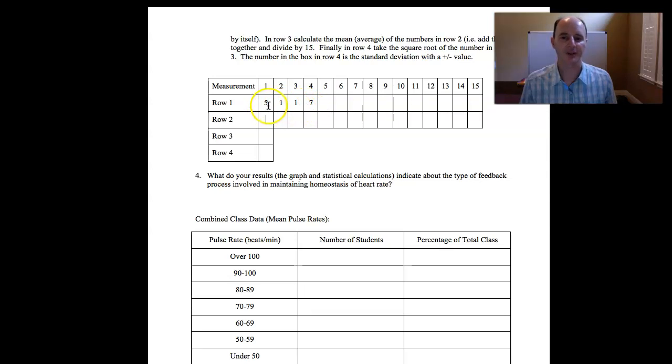If I have 5 in the first one, 5 squared is 25. This is why the negative wouldn't matter. Negative 5 times negative 5 is a positive 25. So the negatives would go away anyways. 1 squared is 1. 1 squared is 1. 7 squared is 49. You get the idea. And so forth. So you would do all of these based off of the numbers that you have in row 1.